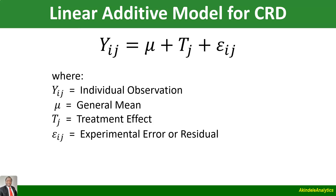The linear additive model for completely randomized design is: Yij equals mu plus tj plus epsilon-ij, where Yij stands for the individual observation, mu is the general mean, tj is the treatment effect or effect of the jth treatment, and epsilon-ij is the experimental error or residual.